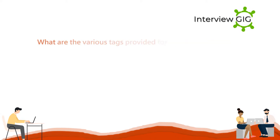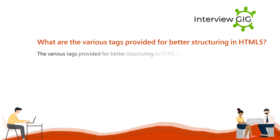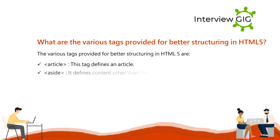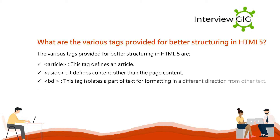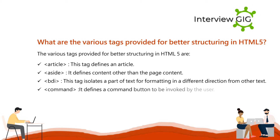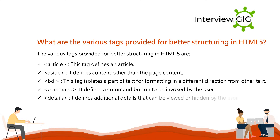What are the various tags provided for better structuring in HTML5? The various tags provided are: Article, which defines an article; Aside, which defines content other than the page content; BDI, which isolates a part of text for formatting in a different direction from other text; Command, which defines a command button to be invoked by the user; Details, which defines additional details that can be viewed or hidden by the user; and Dialogue, which defines a dialogue box.